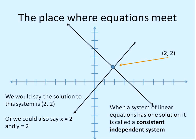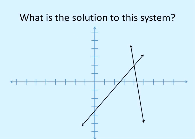If they cross one time, we call this a consistent system and an independent system. So this would be a consistent independent system. They cross at one point. It has one solution for the system, and it's consistent independent. Let's look at some examples of consistent independent systems and solve them using the graphing method.